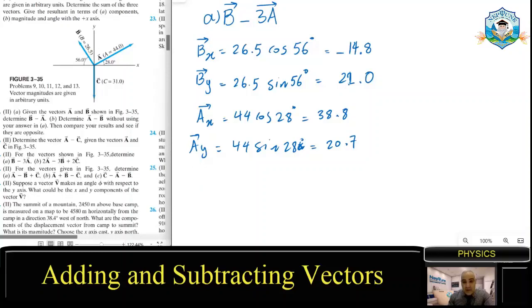B, so that's -14.8 minus three times A, which is 38.8. Make sense? -14.8, so that's the X component. So let's get X.